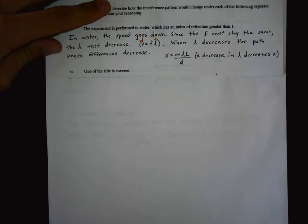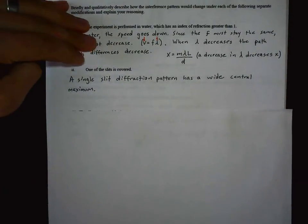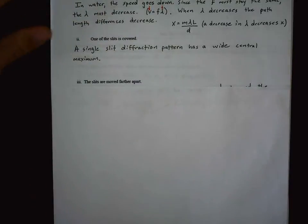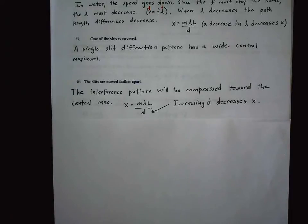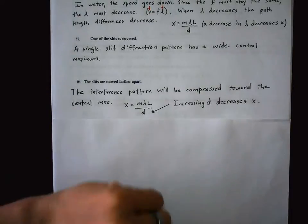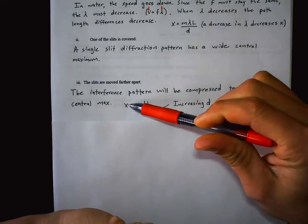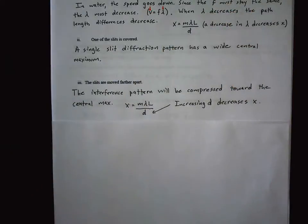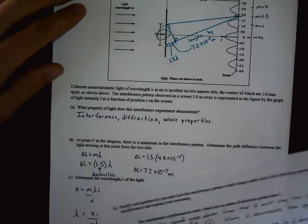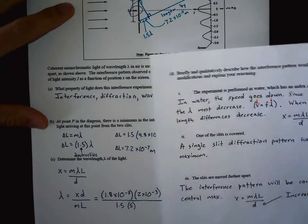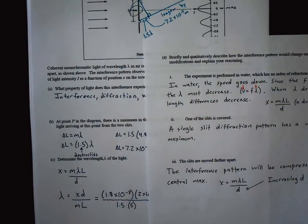D2: one of the slits is covered — this just becomes a single slit diffraction pattern with a wide central max. D3: the slits are moved farther apart — increasing D decreases x, so the interference pattern is compressed towards the central max.